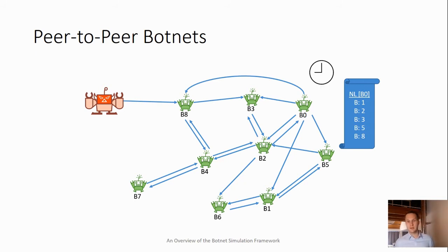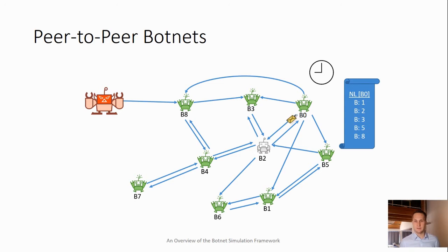Over time, machines may go offline and come back online; the botnet changes and evolves. To keep track of that, most peer-to-peer botnets exchange messages frequently in a so-called membership management interval, in which they check in if their neighbors have new updates, if they are still available, and generally to remain connected within the overlay. At some point a bot may go offline — like in this case bot b2 — and if b0 tries to probe b2 it will not get a reply. Continuous probing will fail, leading b0 to remove b2 from its neighbor list and then actively look for additional entries by sending messages to its other neighbors like b1, to establish a connection to b6 as a replacement for b2.